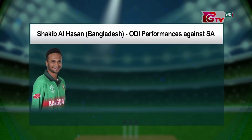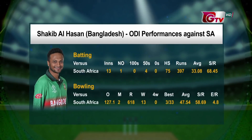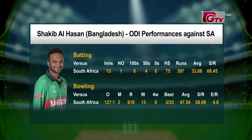Sakib Al Hassan's record against South Africa. In the first format, his batting average is 33.08 with a strike rate of 68.45. Here is Sakib Al Hassan's batting record against South Africa.